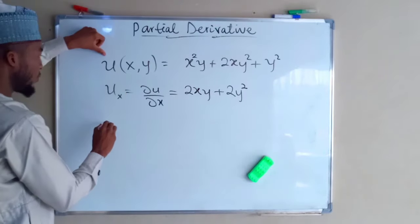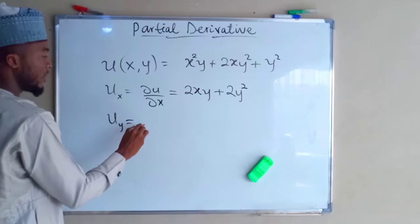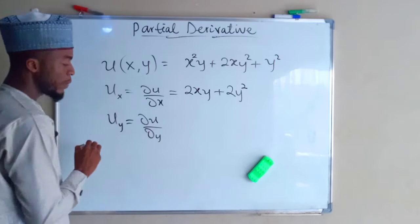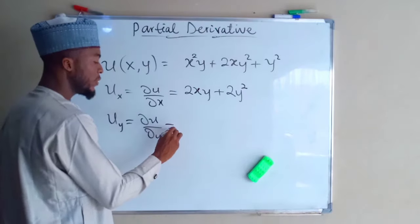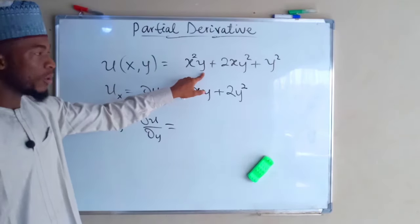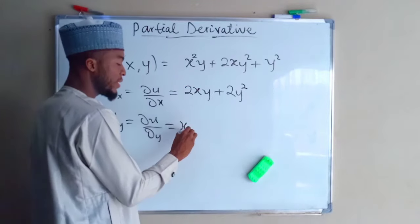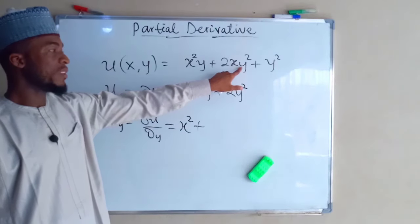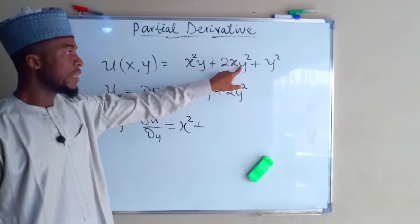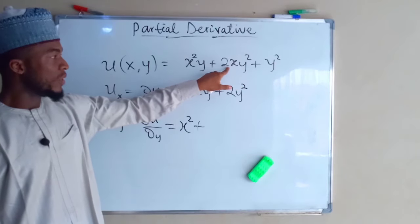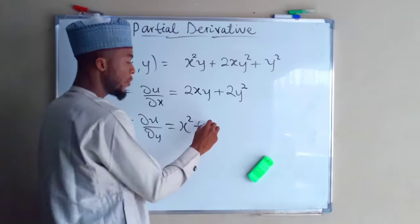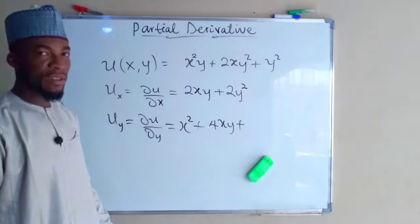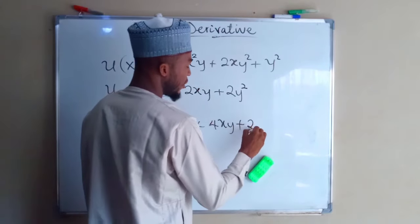Now to differentiate u with respect to y, you are going to find delta u over delta y, keeping x as constant. If you differentiate y in the first term, you are going to get 1, and 1 times x squared is x squared. Plus, for the second term, if you differentiate y, you obtain 2y. The other coefficient remains constant, so we have 2y times 2x, making 4xy. Plus, if you differentiate the last term, which is also y, we obtain 2y.